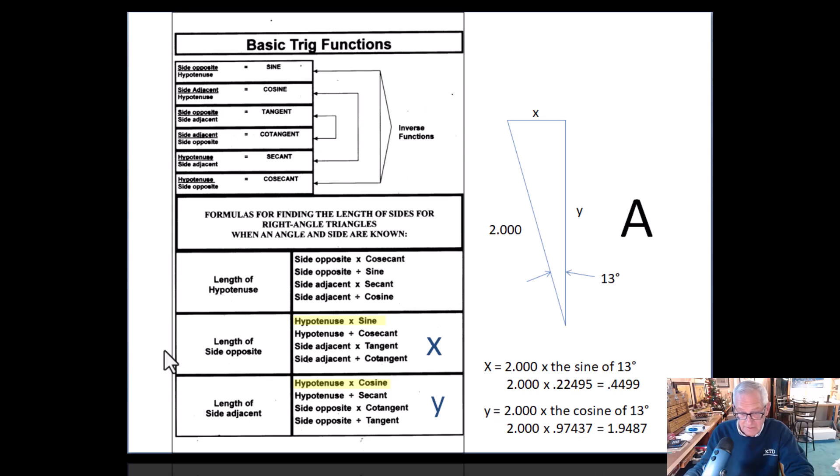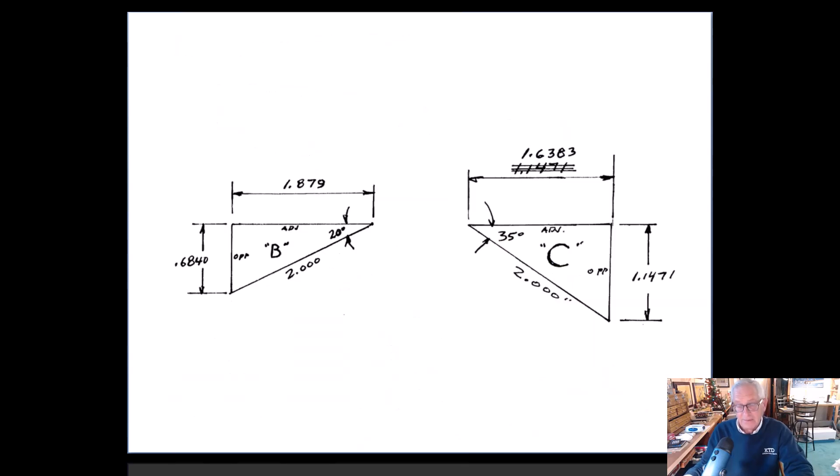Back in the day I would just make a quick hand sketch like that. So this is for triangle B, and I even wrote on here: here's your 20-degree angle, here's your opposite side, your adjacent. Just use those same formulas that I just showed you.